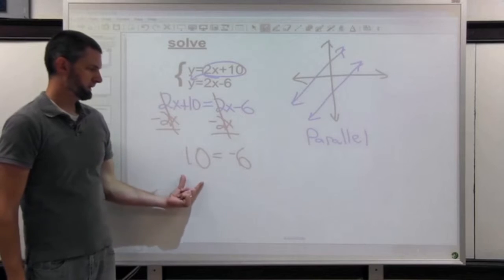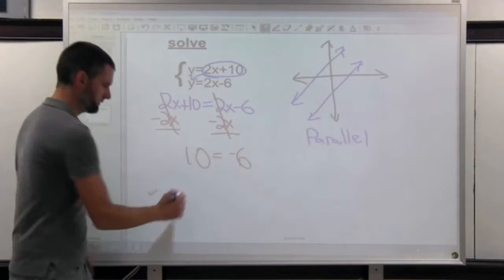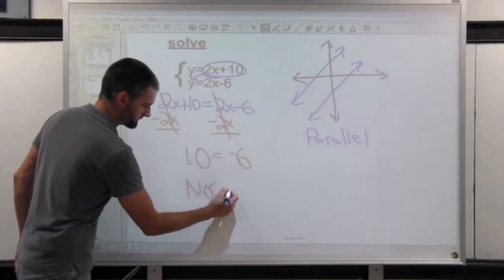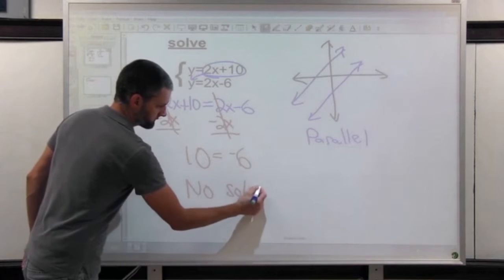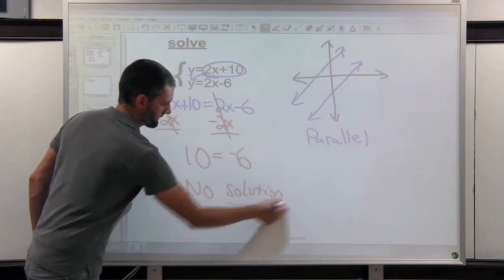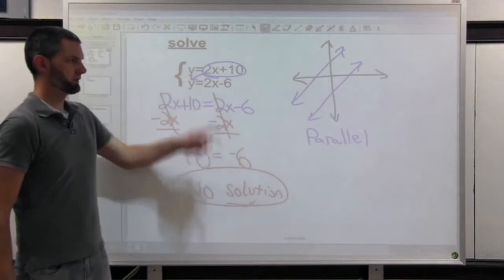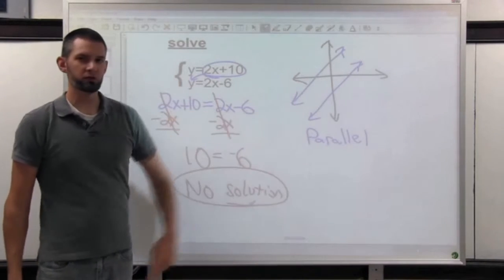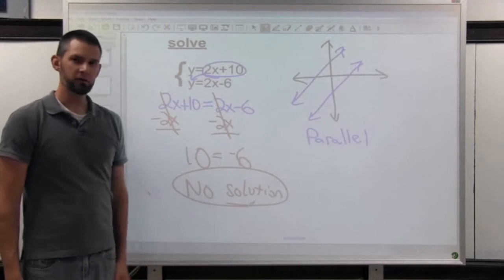When you solve a system and you get something that's not true, that tells you the system has no solution. If you know the equations are lines, then you can say that those lines are parallel and there's no solution.